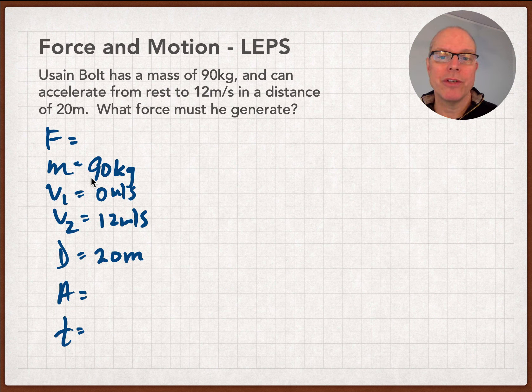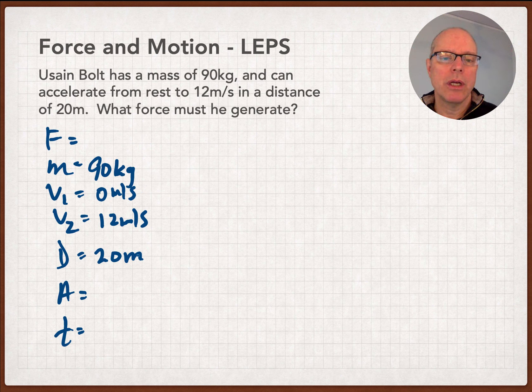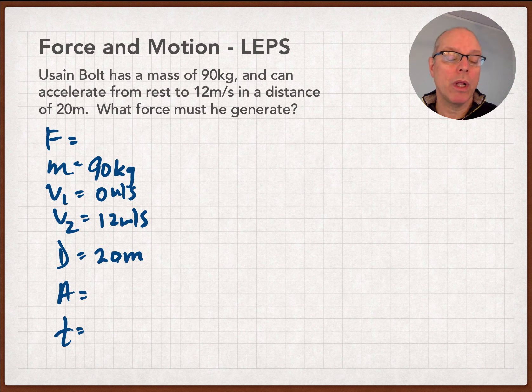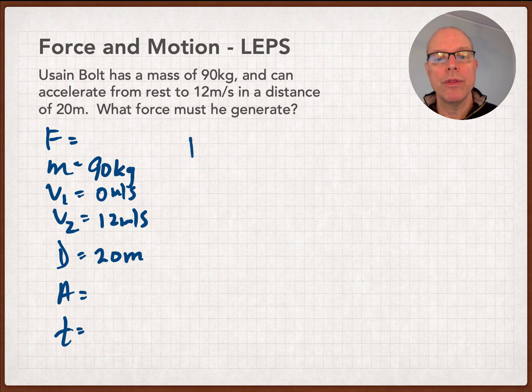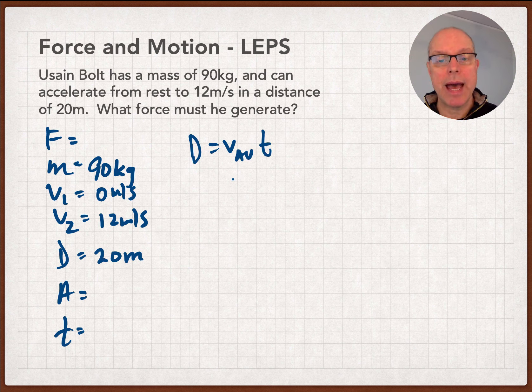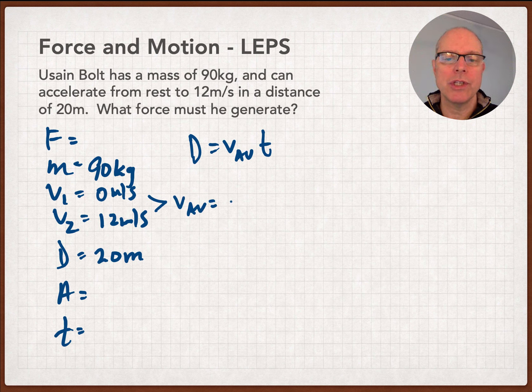We've got Usain Bolt here, who has a mass of 90 kilograms. And so we've penciled that in. He can accelerate from rest. So 0 meters per second is my V1 to 12 meters per second is my V2 and a distance of 20 meters. So what force must he generate? Well, if you notice in this one, they gave us distance, so they didn't give us force. So what I'm thinking is that I'm at the bottom of this layer cake of physics, and I'm going to start somehow with the D equals V average times T formula, and I'm going to see, can I get anything from that? And oh yeah, I can right away because I look at these two velocities, V1 and V2, and I know that V average here is 6 meters per second.